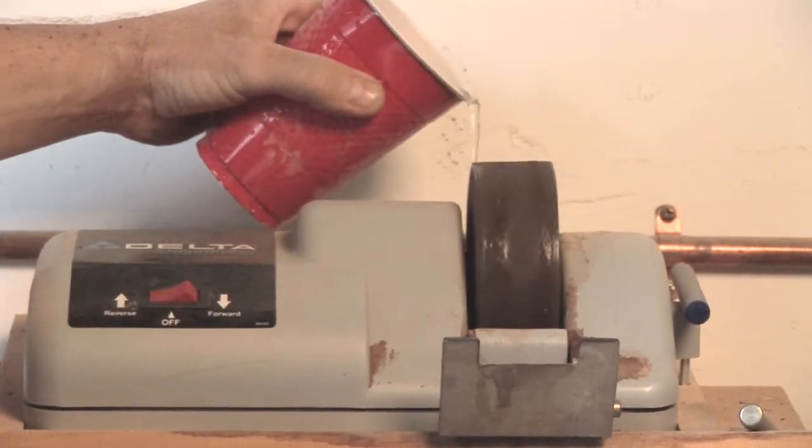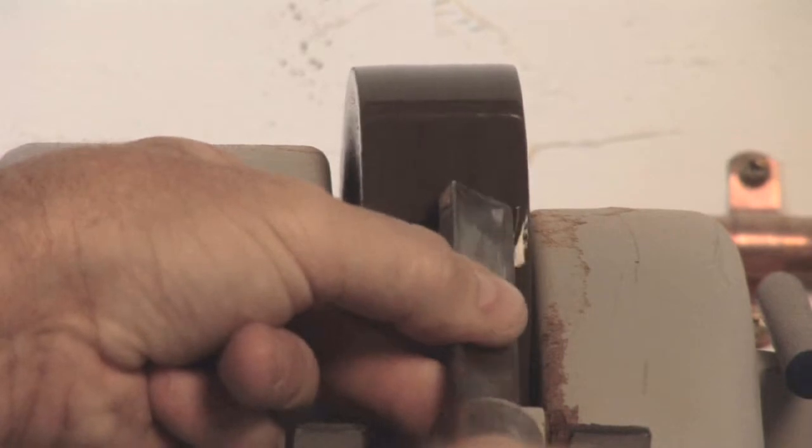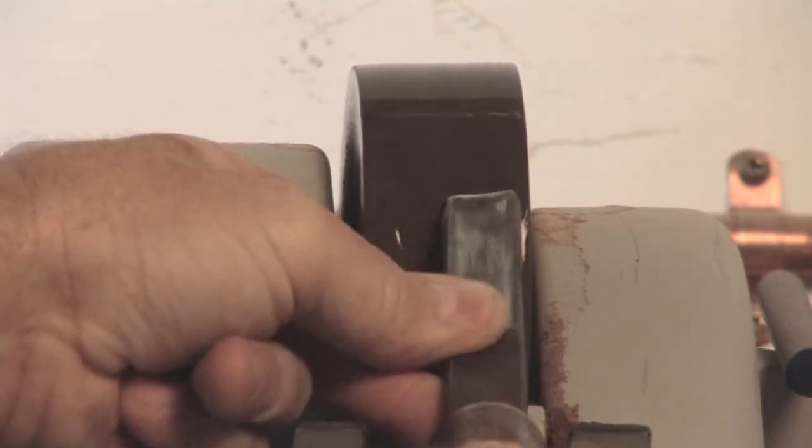The nice thing about a slow speed wet grinder is by its nature it keeps the steel cool and therefore makes it easier to sharpen your tools.